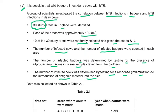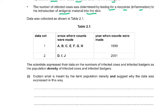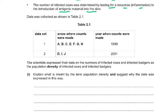Data was collected as shown in table 2.1. Dataset 1 covered areas A, B, C, E, F, G, H with counts made in 1999. Dataset 2 covered areas D, I, J and was done in 2001. The scientists expressed their data as the population density of infected cows and infected badgers.